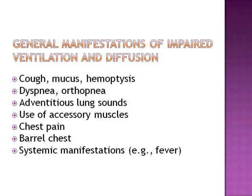In general, with ventilation and diffusion problems we see these manifestations: cough, mucus, hemoptysis, dyspnea, orthopnea, adventitious lung sounds, use of accessory muscles, chest pain, barrel chest, and systemic manifestations such as fever.